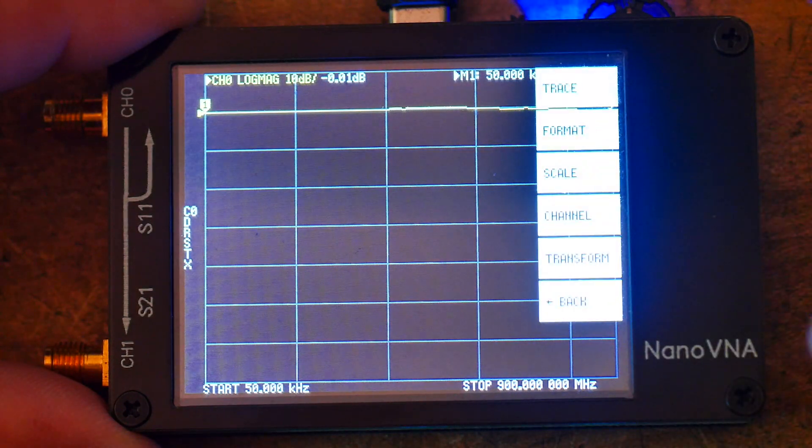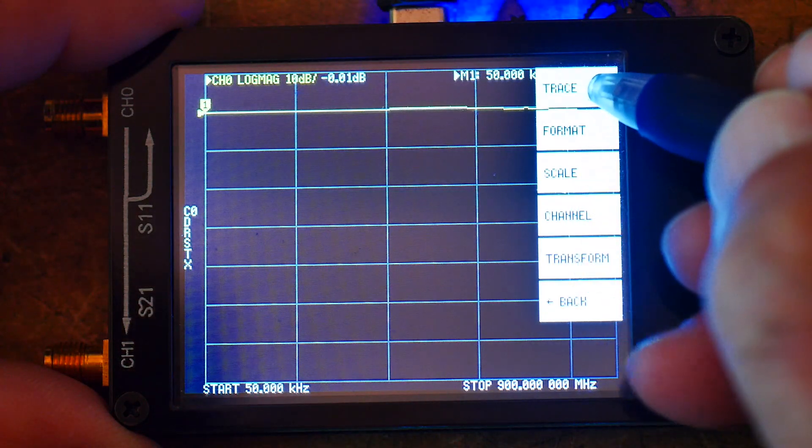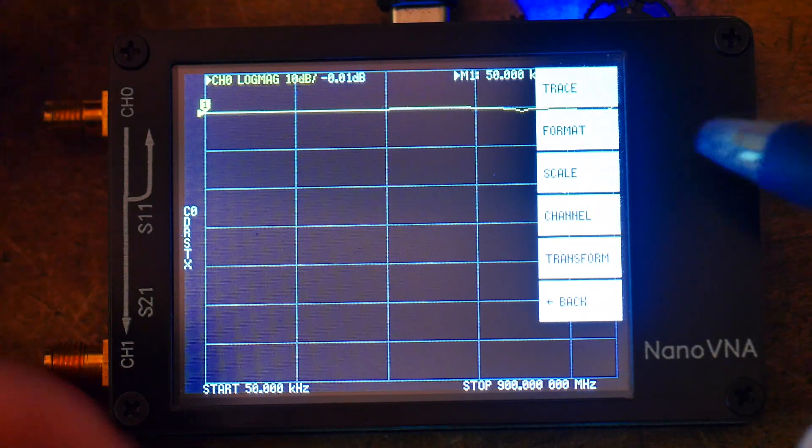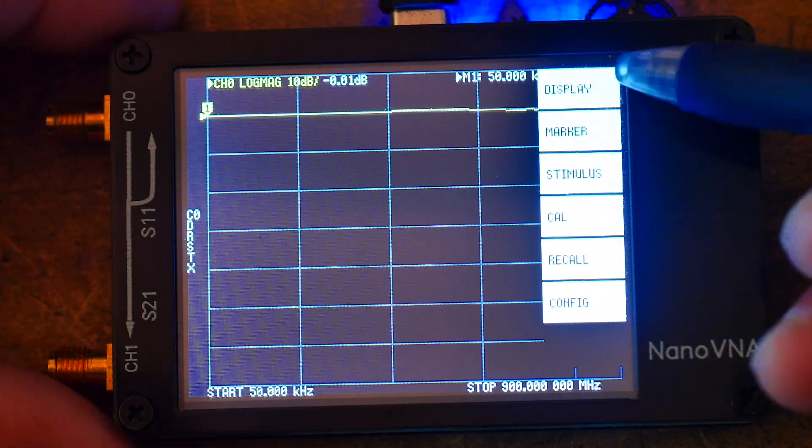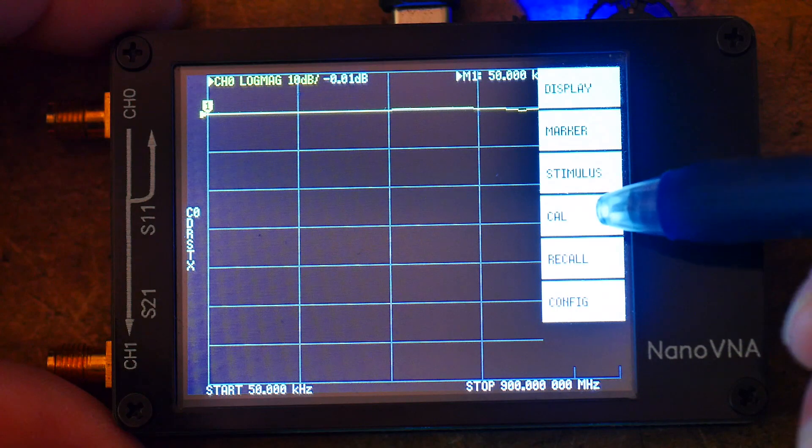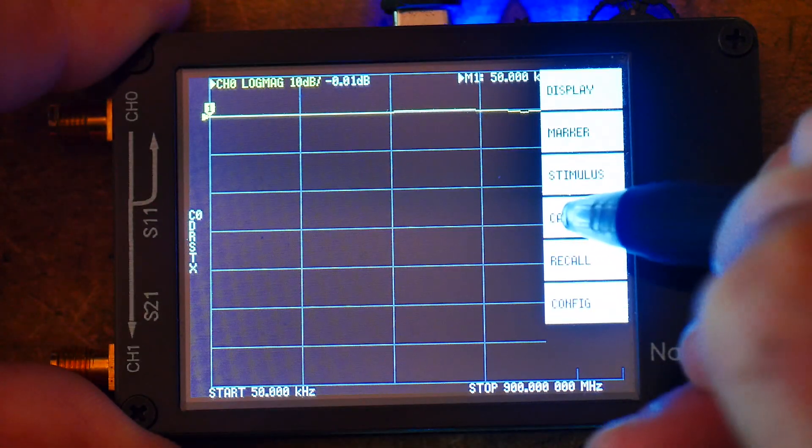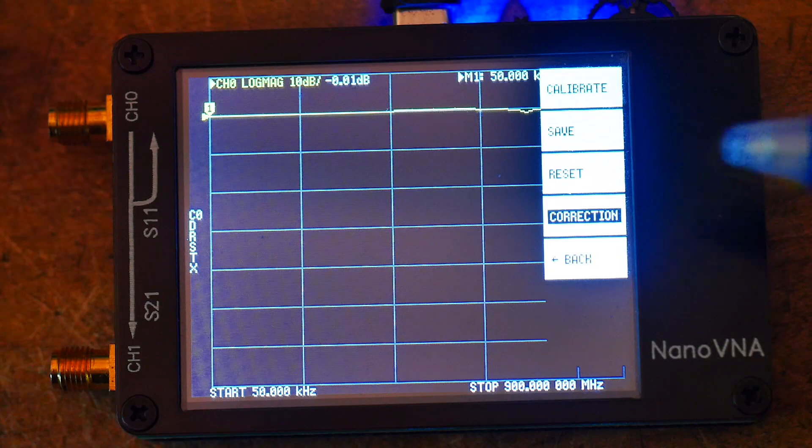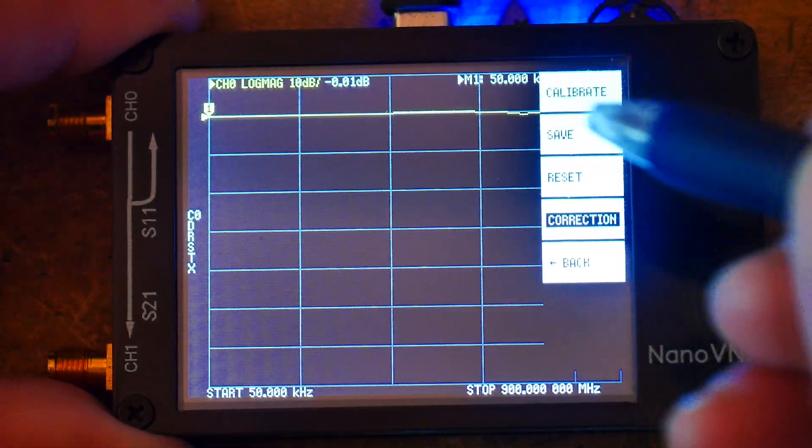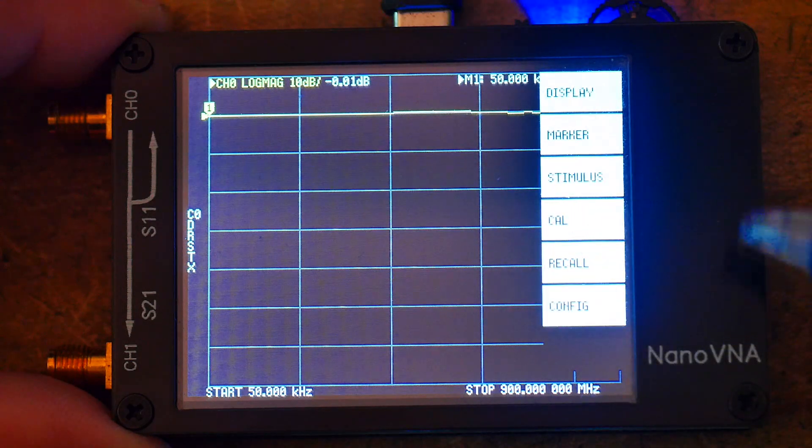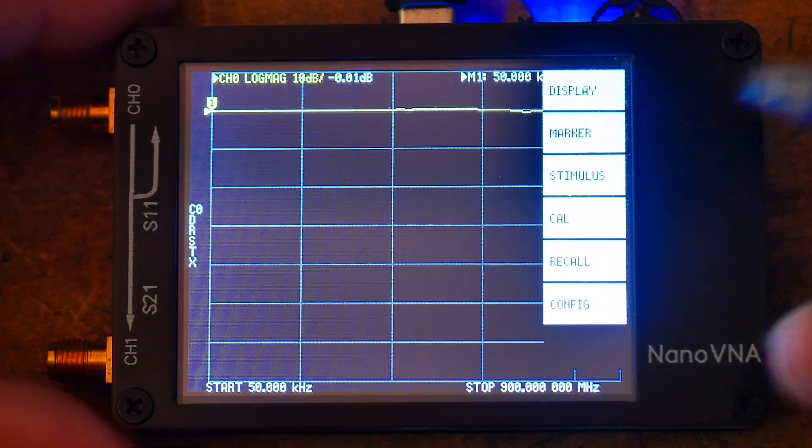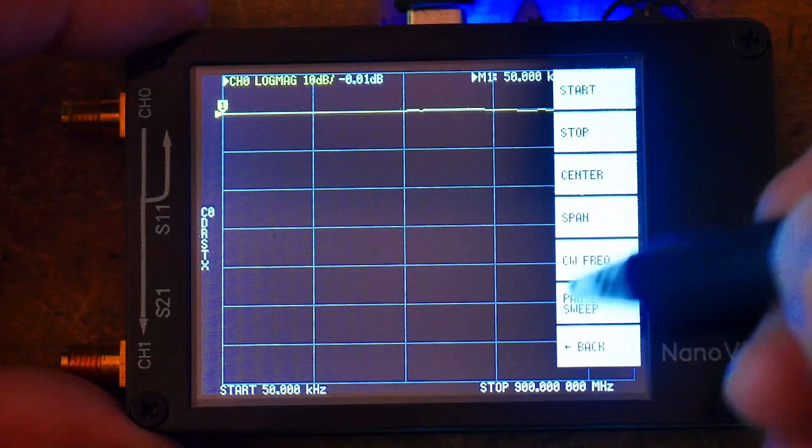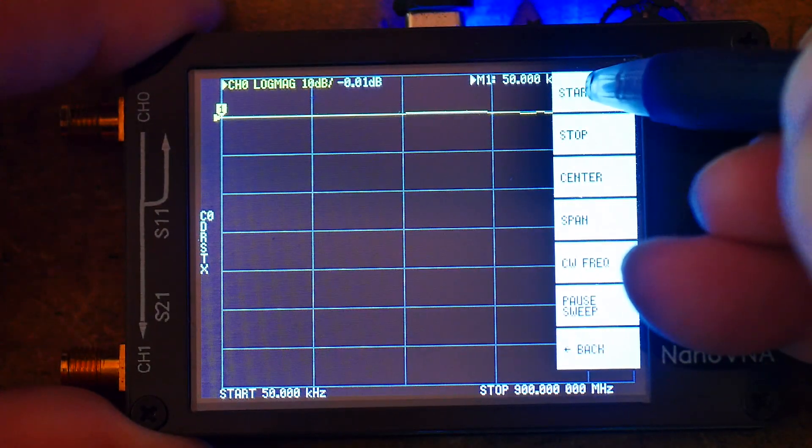Again, we're going to click the upper right. We want to hit calibrate. So do we see it? Trace, format, scale, channel, transform. I don't see it. So we'll click back. Oh, wait a minute. Now I get a different menu. Display, marker, stimulus, CAL. That's what we want. We're going to hit calibrate. Now before we do that, though, we have to set up the frequency range that we want to operate on. So let's go back and we're going to hit stimulus. Stimulus just means what frequencies we're going to use. So we hit stimulus. There we go. We'll see start and stop. Forget everything else. We're just going to use start and stop.